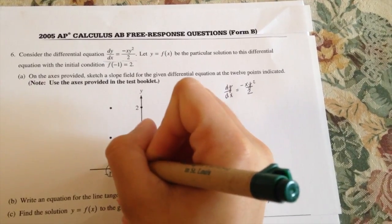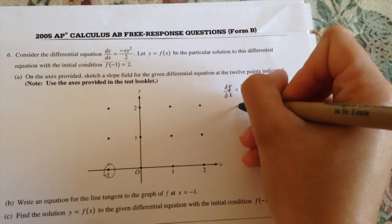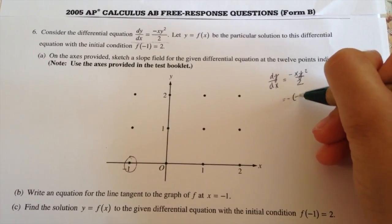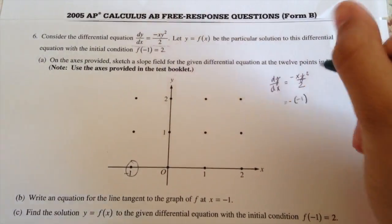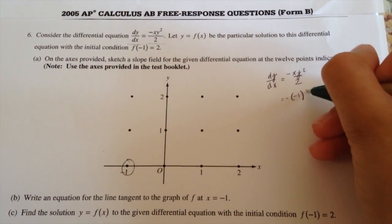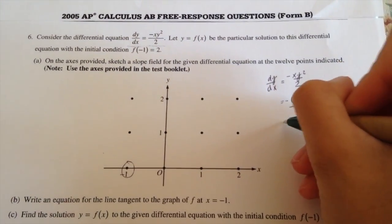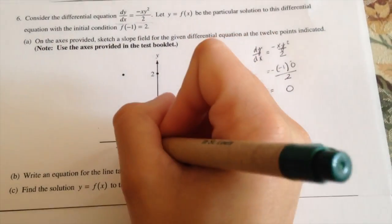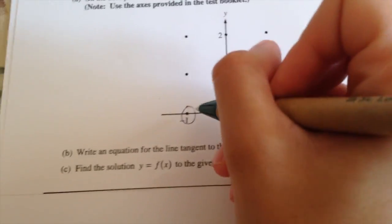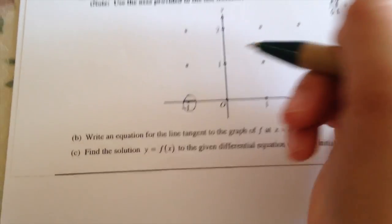So we're going to use this point right here. That would be negative times negative 1 and since the y is 0 you just plug in 0 over 2. That would equal 0. So you just draw a line straight across.